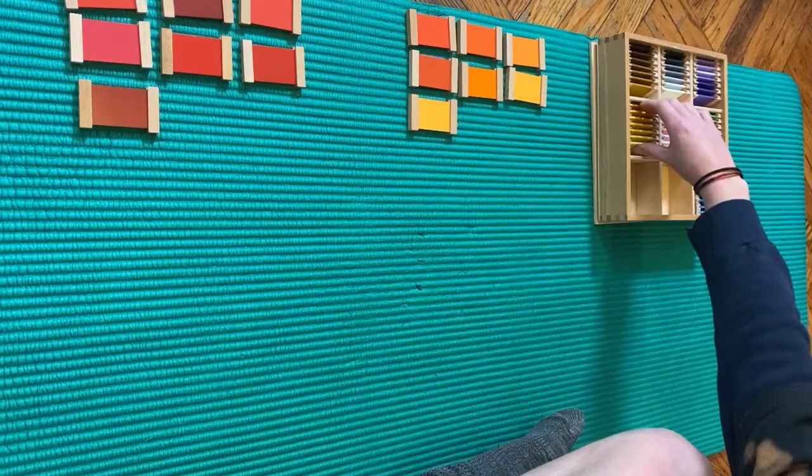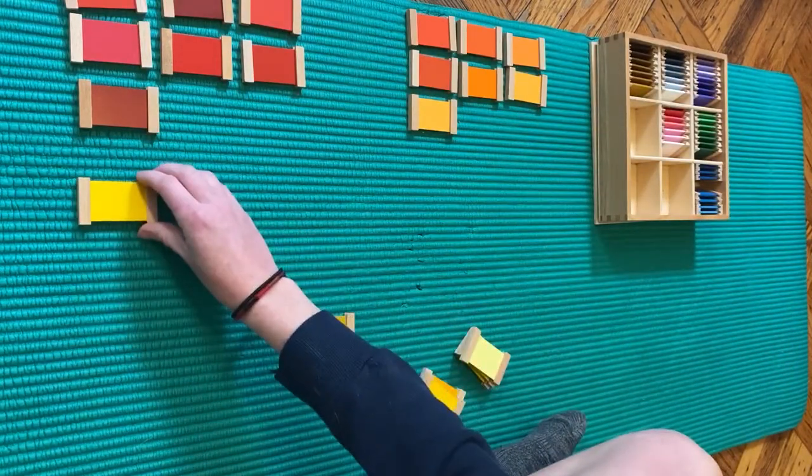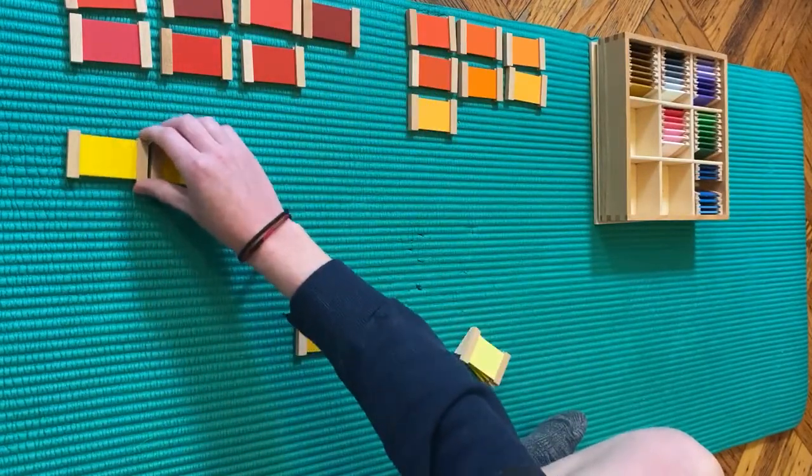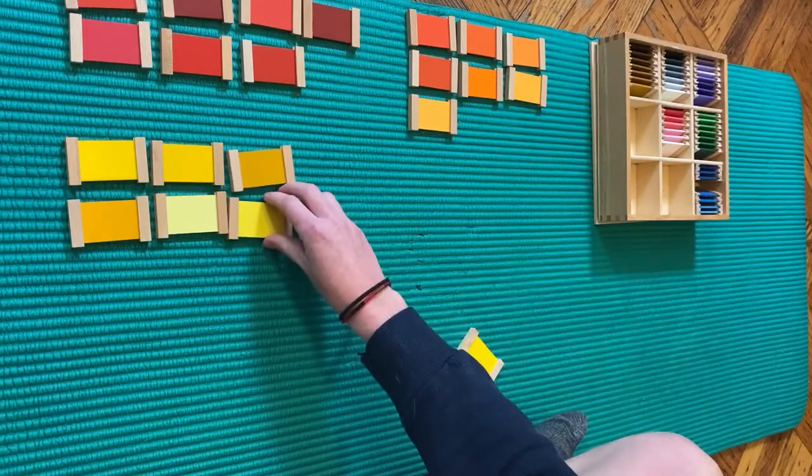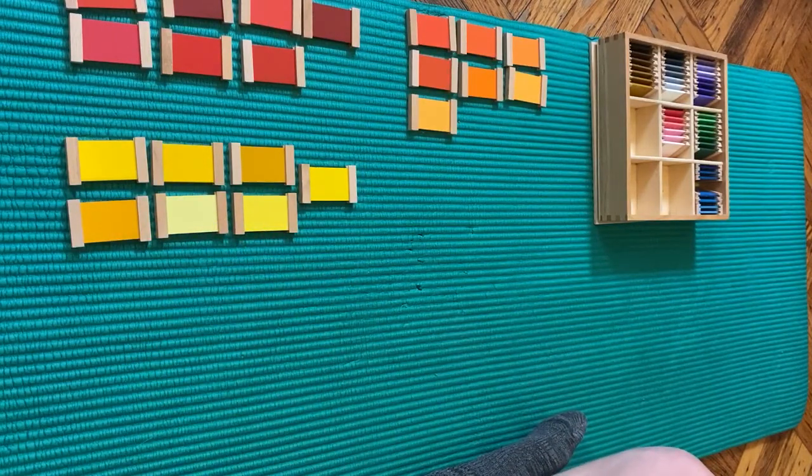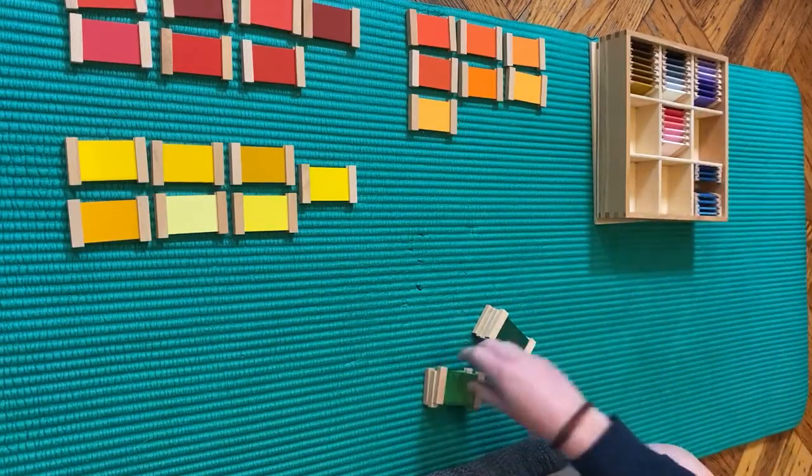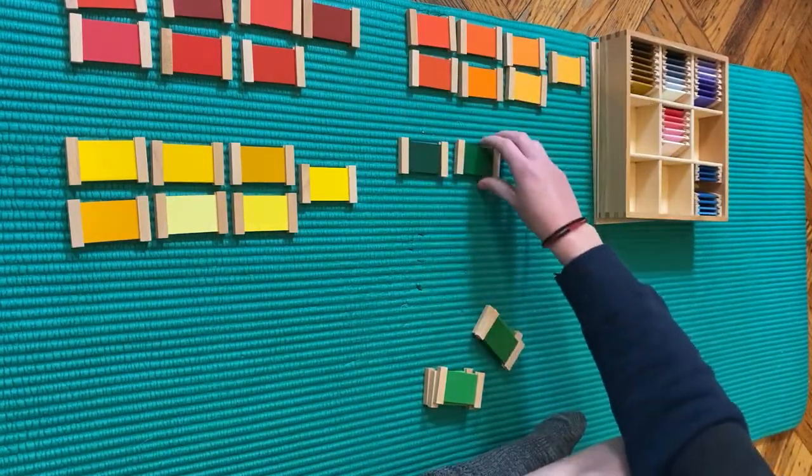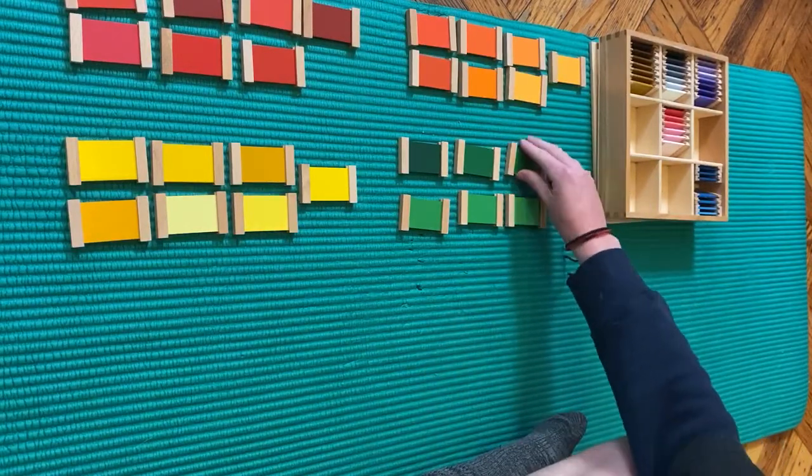Let's look at our yellows. I'm gonna put my yellows under my reds. These are all my yellows. Now I want to look at my greens. These are all of my greens. Green.